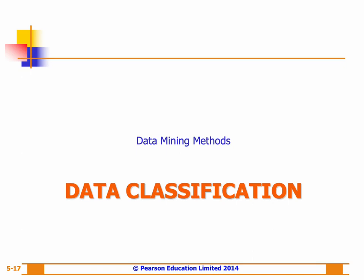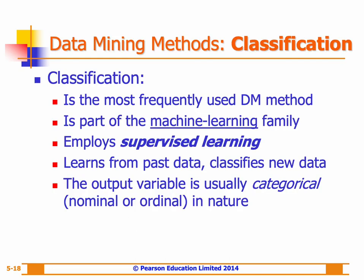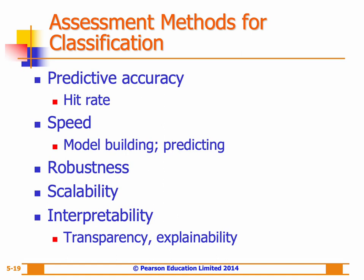Data classification is one of the most frequently used data mining methods for real-world problems. It tries to categorize data or objects into predefined classes based on their features or attributes. Since classification is a supervised learning method, classification algorithms must be trained first on a labeled dataset in order to predict the class of new or unseen data. Once trained, the model is tested using evaluation metrics ranging from simple predictive accuracy or hit rate, to more sophisticated metrics such as robustness — the model's ability to make accurate predictions given noisy input data.